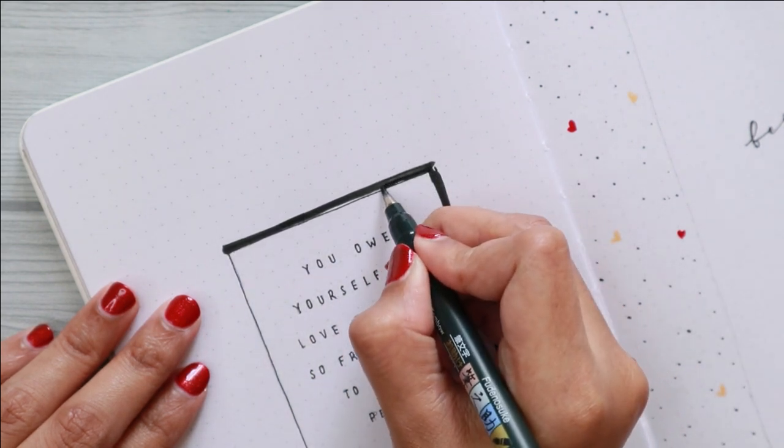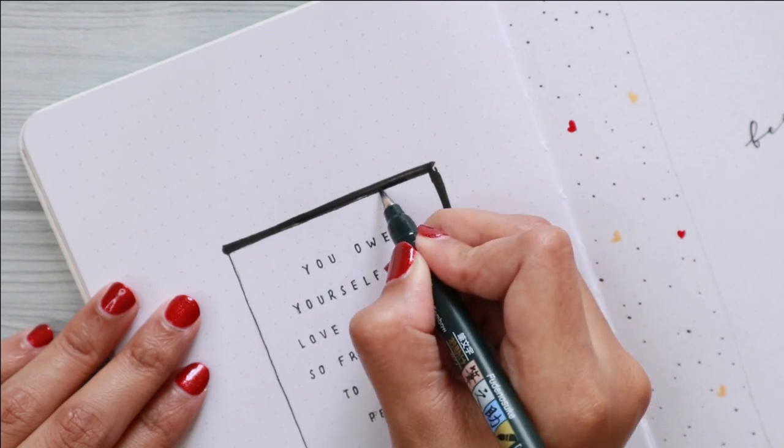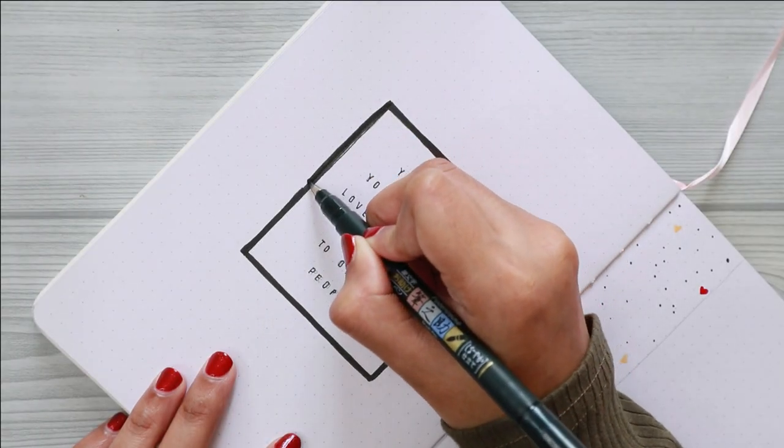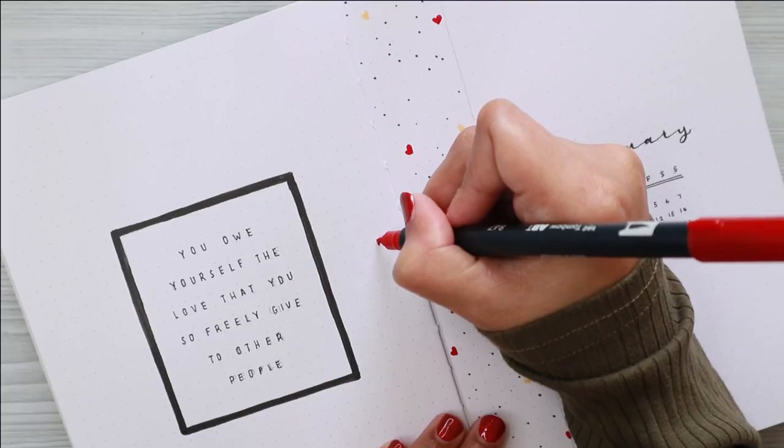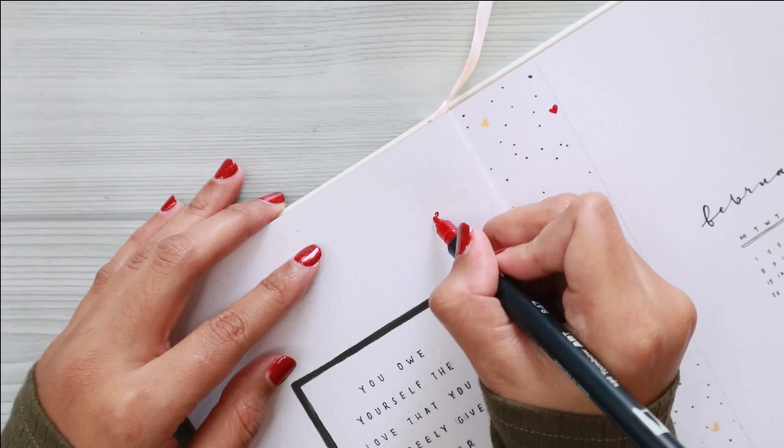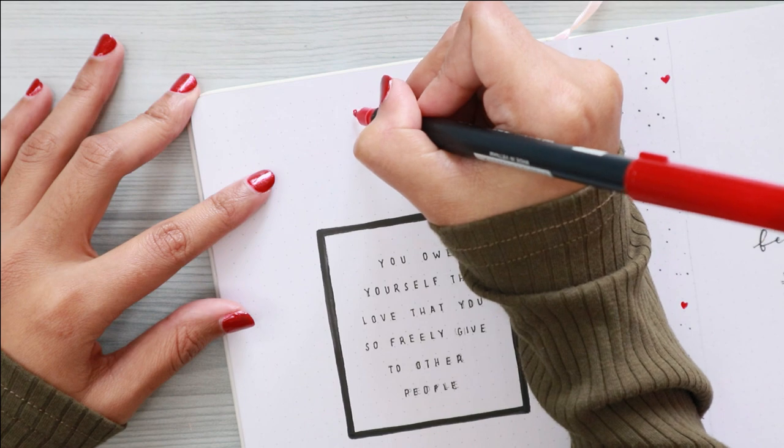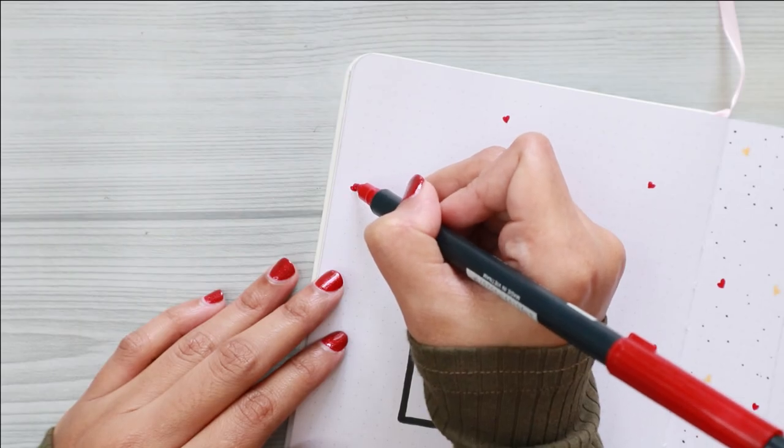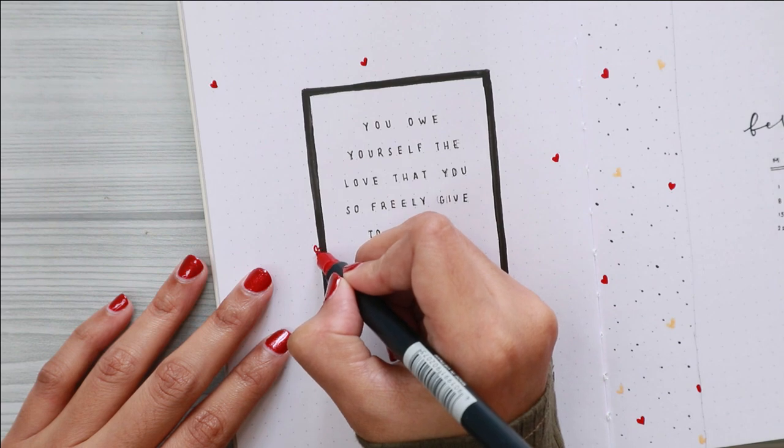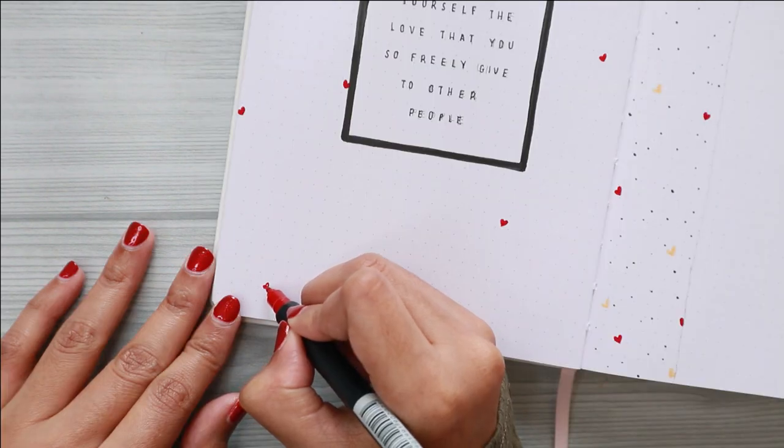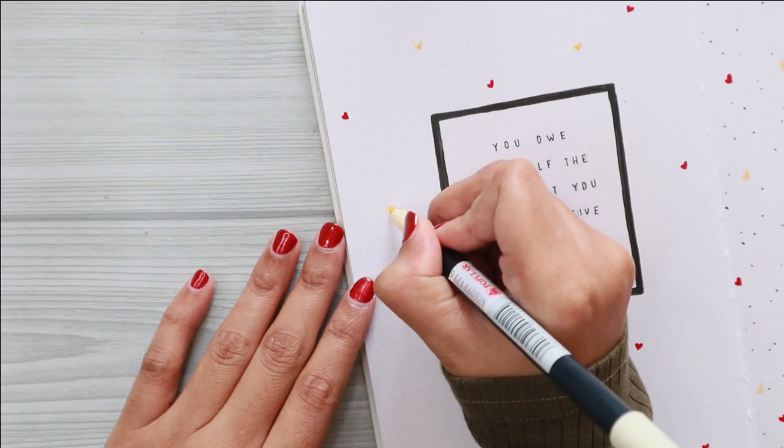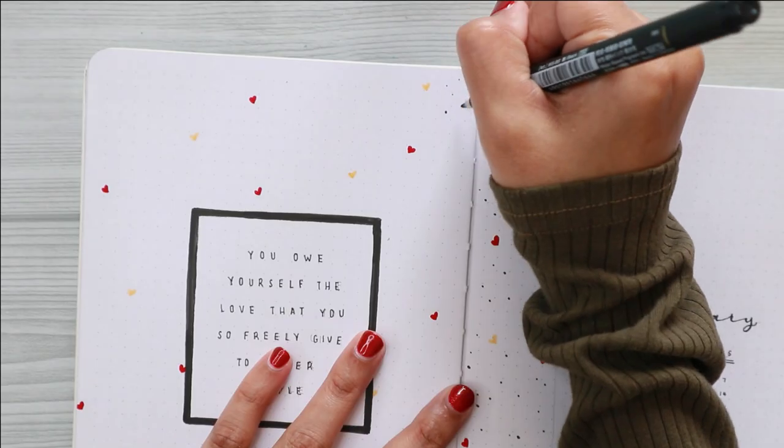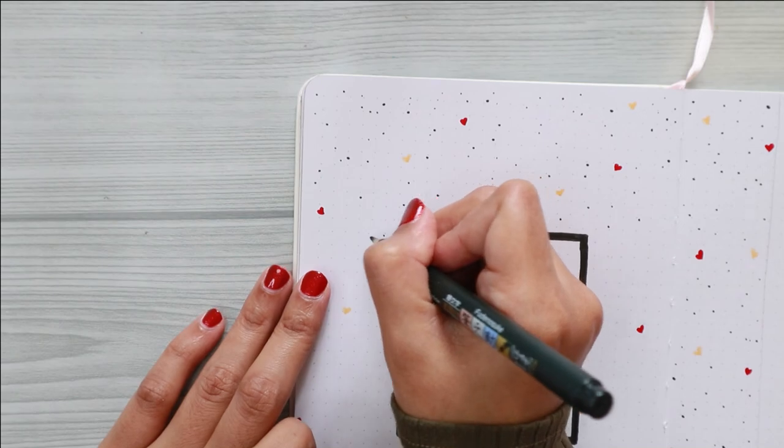Back to this setup: by using the same Tombow Fudenosuke, I draw a border around the quote that says 'You owe yourself the love you so freely give to other people.' Alternatively, if you are afraid that the ink will bleed through the page, you can also use black colored paper and glue to achieve the same result.